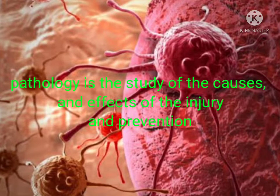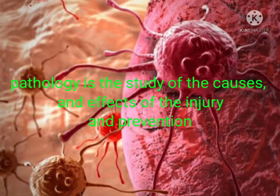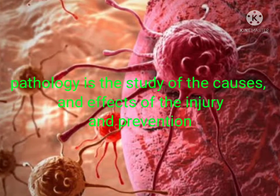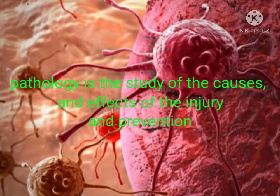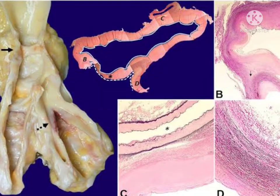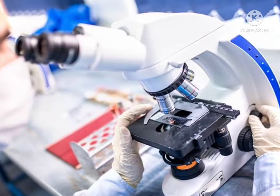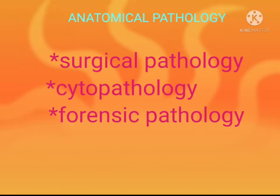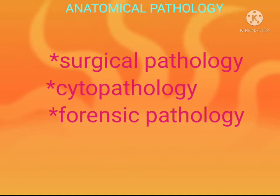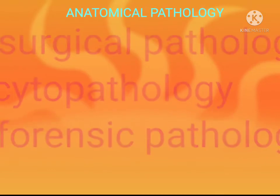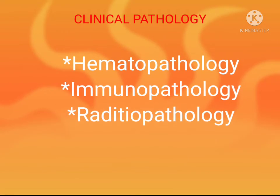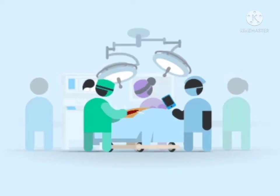Pathology has several branches. The main branches are anatomical pathology and clinical pathology. Under anatomical pathology we have surgical pathology, cytopathology, and forensic pathology. Under clinical pathology we have hematopathology, immunopathology, and radiation pathology.